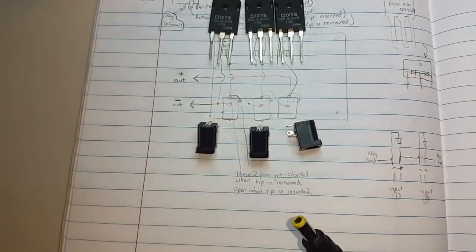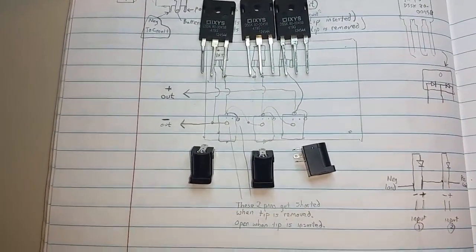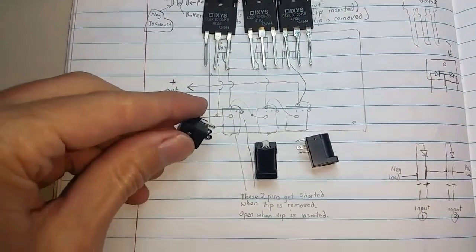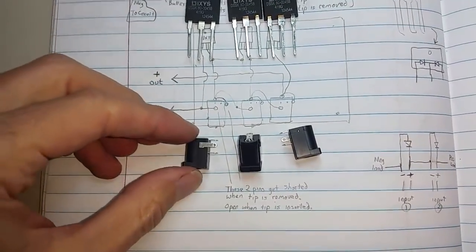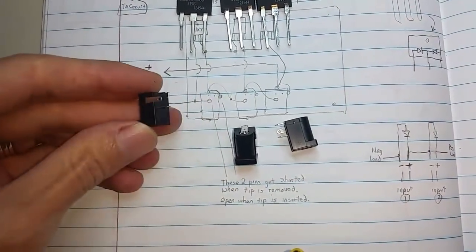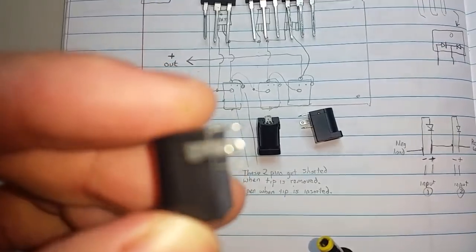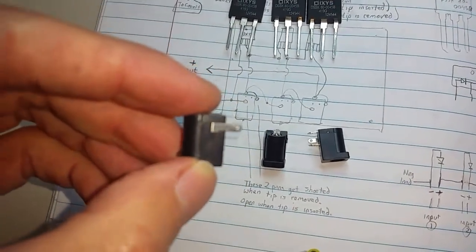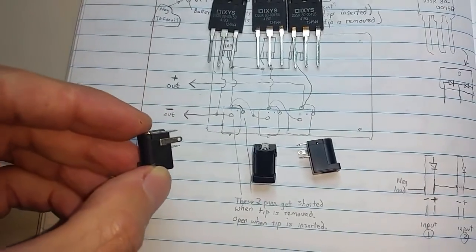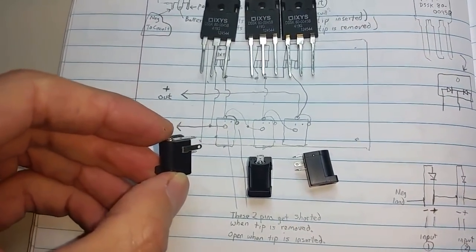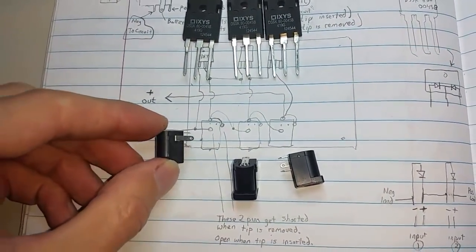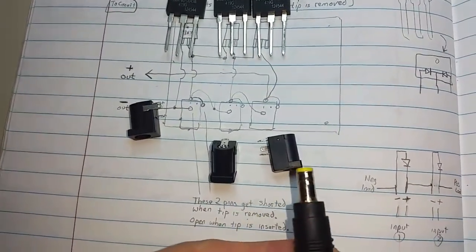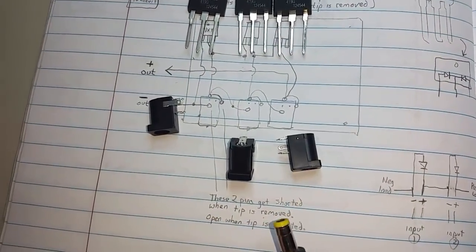So here we are. These are the barrel jacks and here we have three leads on these things. One of them is always positive and the other two are for either the jack that goes in or a battery.